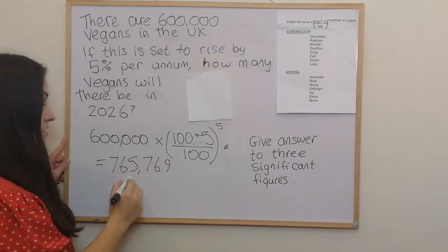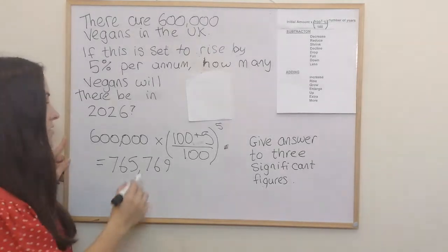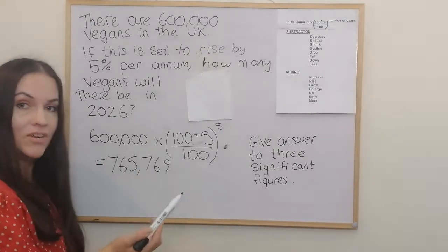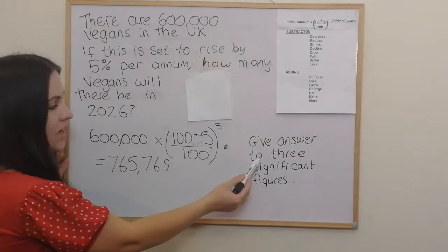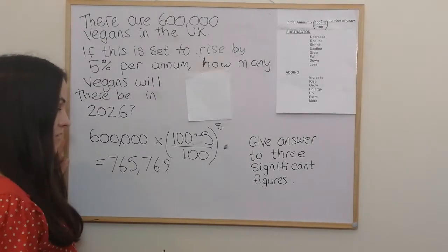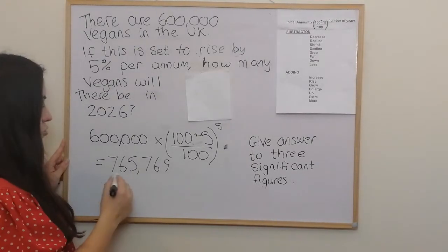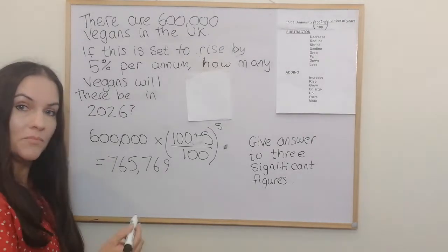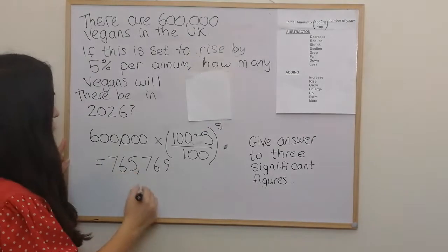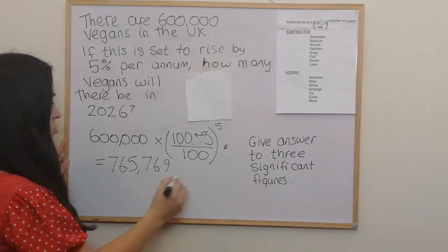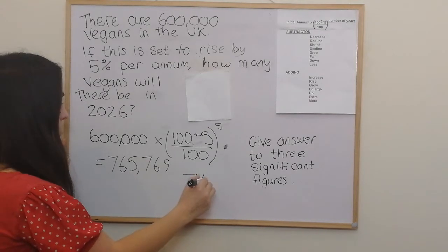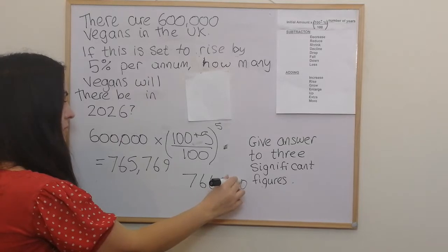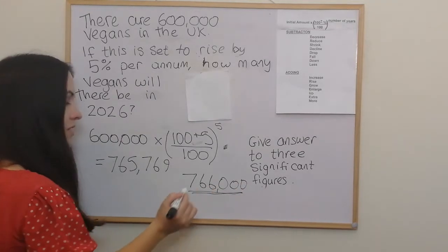So 765,769. As a typical exam question, we're asked to answer to three significant figures — basically the first three digits with the rest as zeros, rounding if necessary. So the final answer is 766,000.